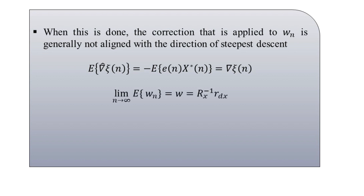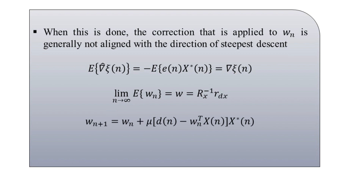We denote: limit as n tends to infinity of the estimate of w(n) equals w, given in terms of the inverse of the autocorrelation matrix R_x multiplied by the cross-correlation r_dx between the desired signal and the input signal x(n). Making a substitution from previous equations for the LMS and steepest descent algorithms, the LMS coefficient update equation takes the form: w(n+1) = w(n) + μ · [d(n) − w^T(n) · x(n)] · x*(n).